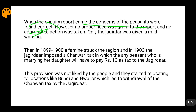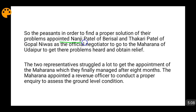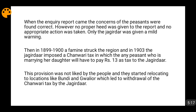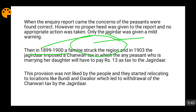The Jagirdar was given only a mild warning. The two representatives — Nanji Patel of Berisal and Thakri Patel of Gopal Nivas — faced action against them and were removed from their constituencies. No proper action was given because if land revenue were reduced, the king's income would stop. Then in 1899–1900, a famine struck the region and people had nothing to eat. Despite this, in 1903, the Jagirdar imposed the Chanwari tax.